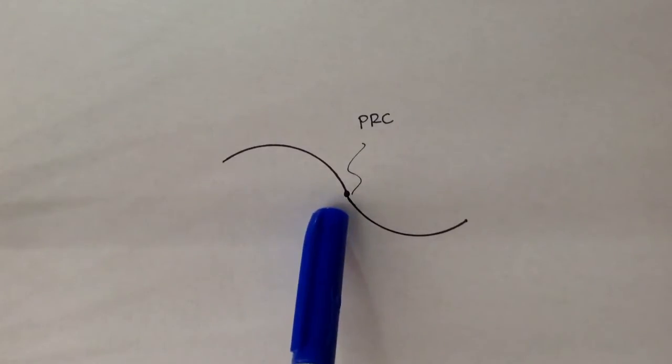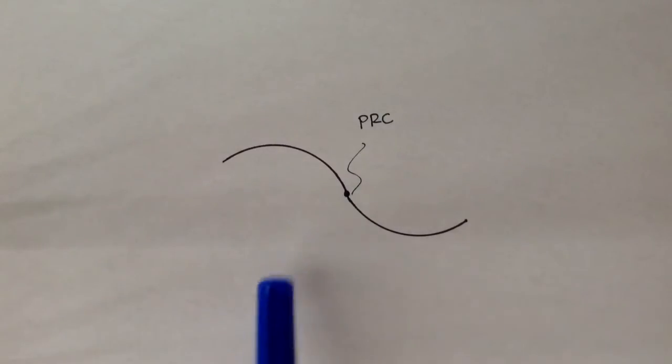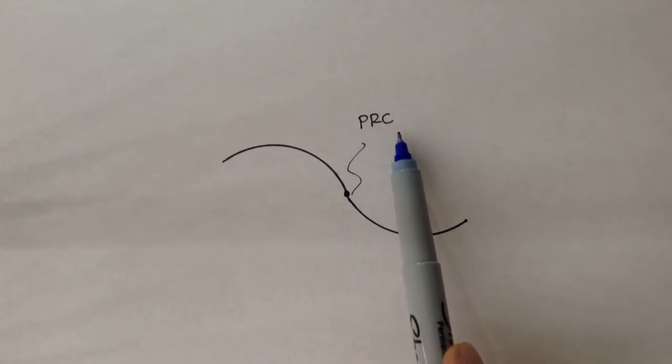And this point where there's a change in direction is called the PRC, and the PRC stands for Point of Reverse Curvature. This is where the curves change in direction.